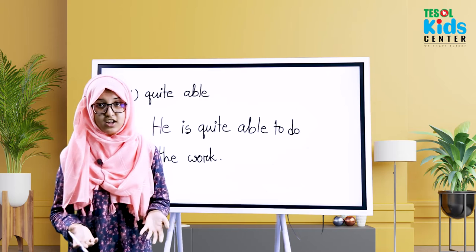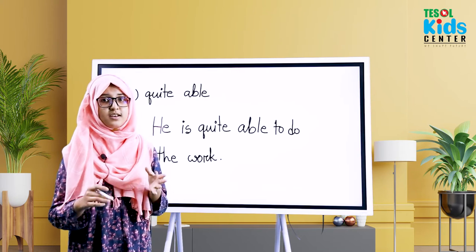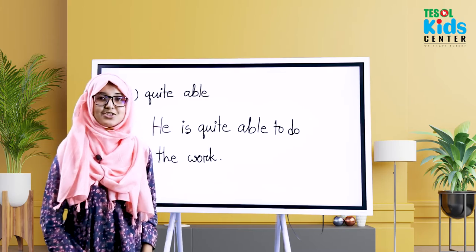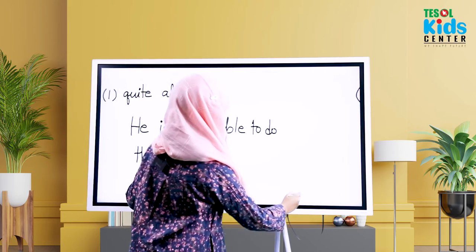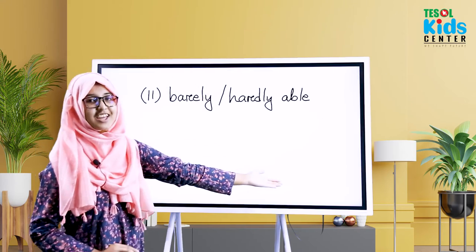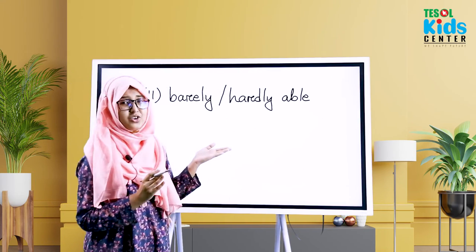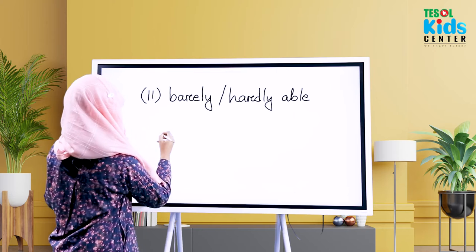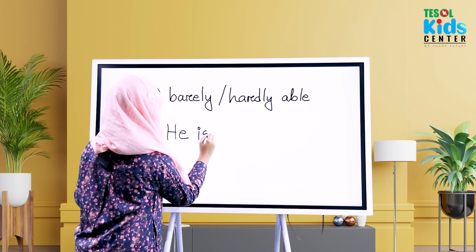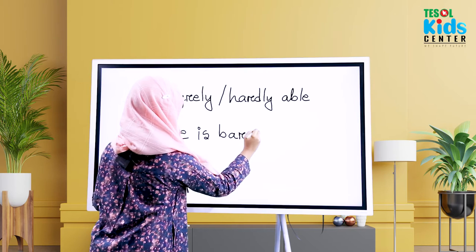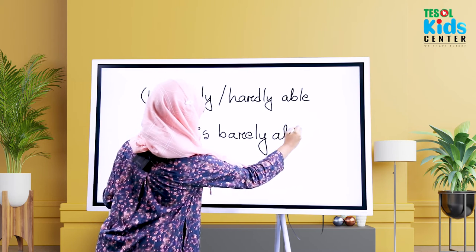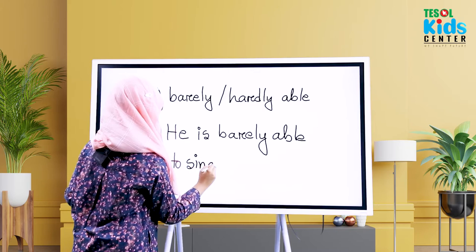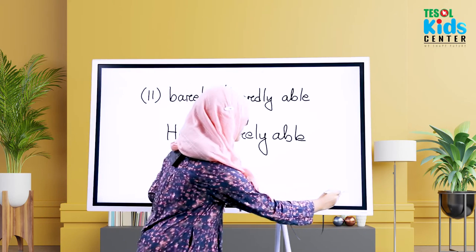You can also say 'more than able' in collocations, because we use the phrase 'more than' before 'able' to show how capable someone is. Now let's move on to the next one: 'barely able' or 'hardly able.' If you are barely or hardly able, it means you are able to do it but not that well. For example, 'he is barely good at singing' means he can sing but not very well. Barely able and hardly able both mean the same thing.